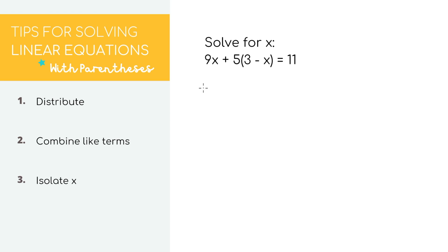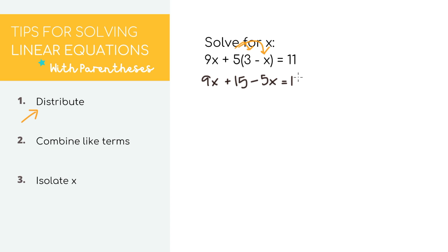For our fourth equation, we have more expressions to work with, but we'll do the same process. Any time we see parentheses with expressions inside, we distribute to get rid of them. When distributing, we only look at the number directly outside the parentheses. Even though we have 9x, we only multiply that 5 by the numbers inside the parentheses. So we bring down 9x, then 5 times 3 equals 15, and 5 times negative x equals negative 5x. This time we use step 2 because 9x and negative 5x both have x's, so we can combine: 9x minus 5x equals 4x.